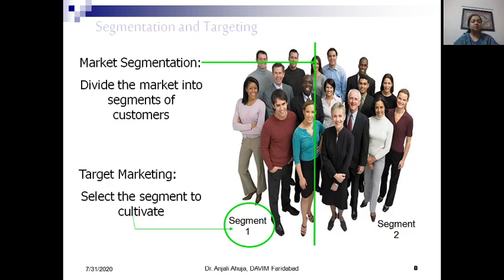Now, targeting and segmentation of the market. The market has to be divided into segments because all customers do not have exactly the same kind of needs and wants. So if they have different sets of needs and wants, they need to be segmented and offered different kinds of products. The first step is market segmentation — we divide or segment the market. As shown in this diagram, suppose the market is divided into two segments: segment one and segment two.